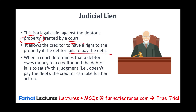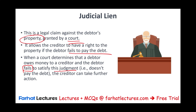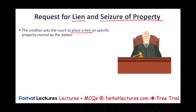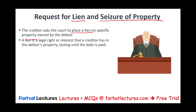When the court determines that a debtor owes money to a creditor and the debtor fails to satisfy this judgment — meaning does not pay the debt — the creditor can take further action. They can request a lien and seizure of property. A lien is a hold on your property so you cannot sell it, and if you sell it, they get their money first. Seizure means they take your property. A lien is a legal right or interest the creditor has in the debtor's property, and it will stay there until the debt is paid. If you want the lien removed, pay off the debt.